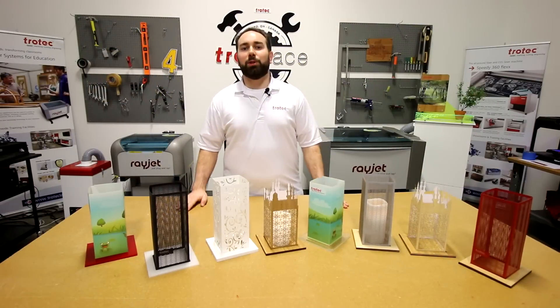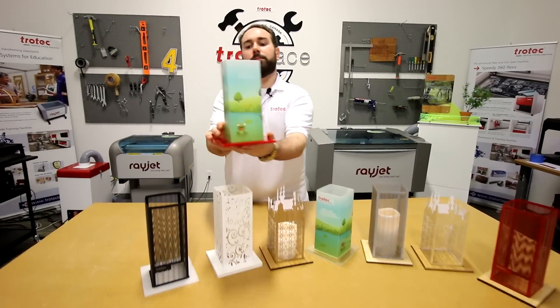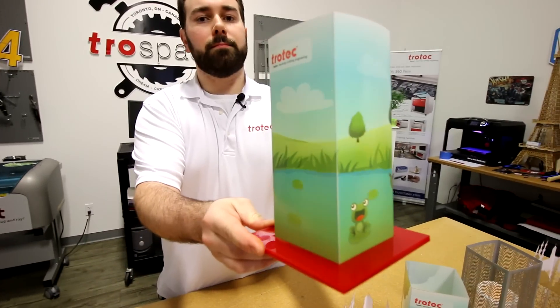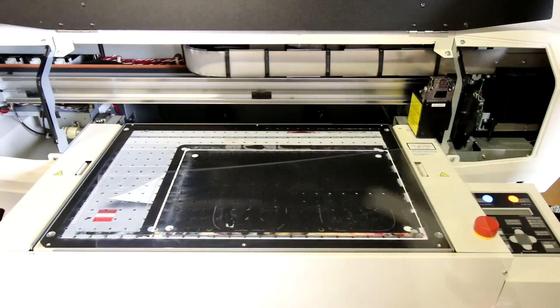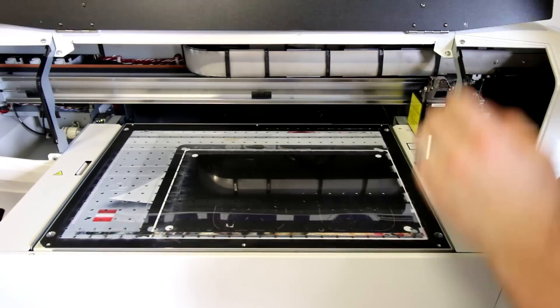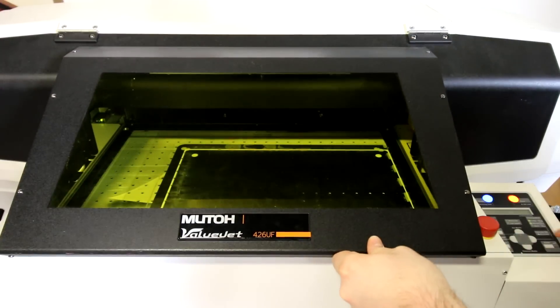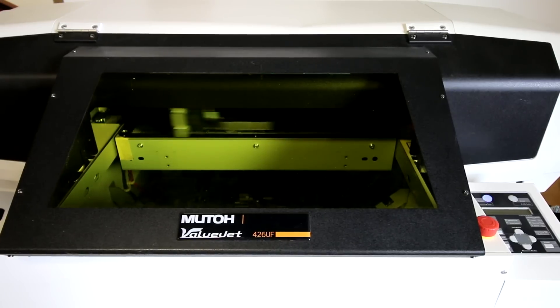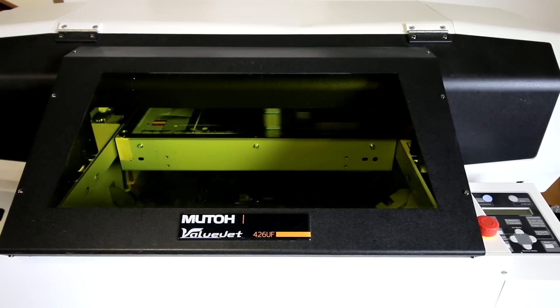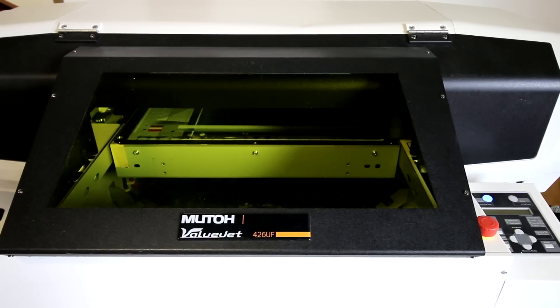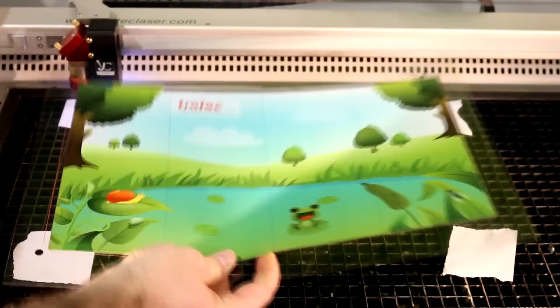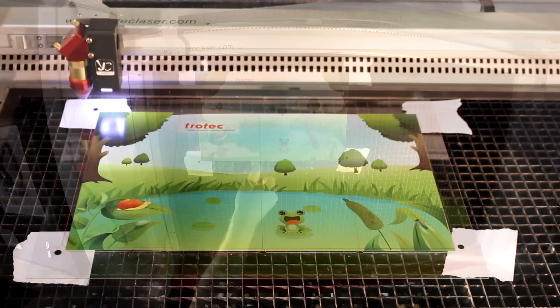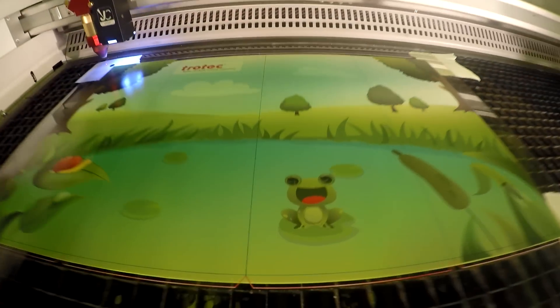Next we'll show you our transparent synthetic paper lantern. First we put our transparent synthetic paper into our MUTO ValueJet 426UF UV printer. We printed our design and registration marks. Then we put it into our Speedy 400. The vision camera system on the Speedy 400 then found our registration marks and cut out our design as necessary.